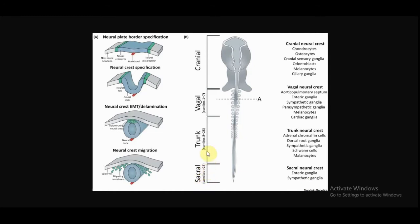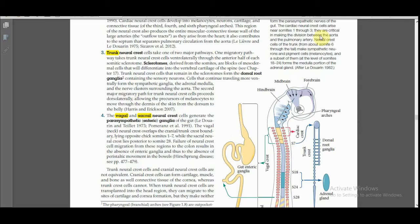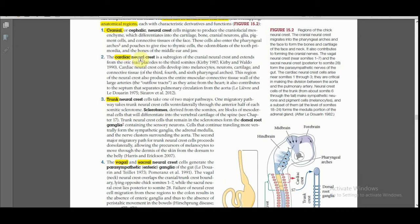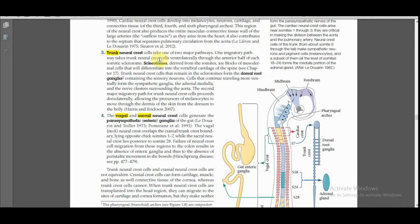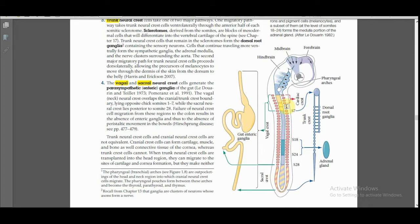Each neural crest region corresponds to specific somite numbers indicating the location of neural crest formation. Vagal neural crest corresponds to somites 1 to 7. Trunk neural crest corresponds to somites 7 and above. Sacral neural crest corresponds to somites greater than 28. In some classifications of vagal and sacral neural crest, cardiac neural crest is also recognized as a separate category.